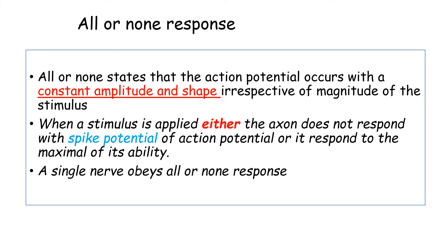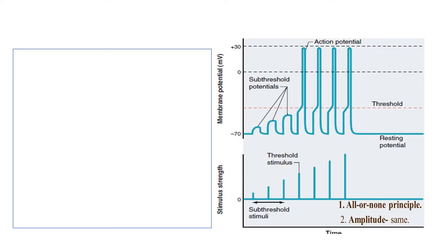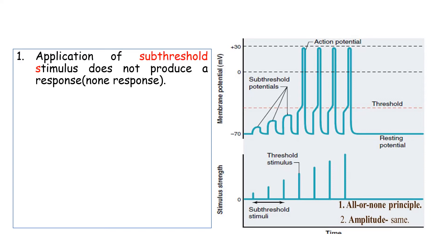Another characteristic property of excitability of the nerve is the all-or-none response. Whenever an action potential is fired, it is of constant amplitude and shape irrespective of the magnitude of the stimulus. In this graph, we have membrane potentials shown for sub-threshold, threshold, and supra-threshold stimuli along with their corresponding action potential responses. For a sub-threshold stimulus, there is no action potential because the stimulus does not produce sufficient excitation for the nerve.